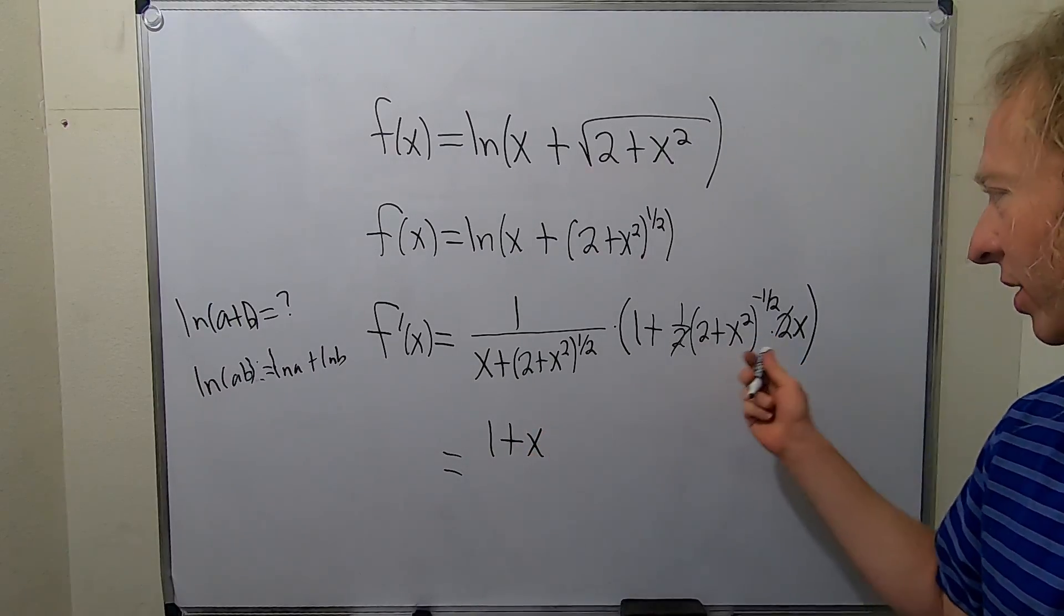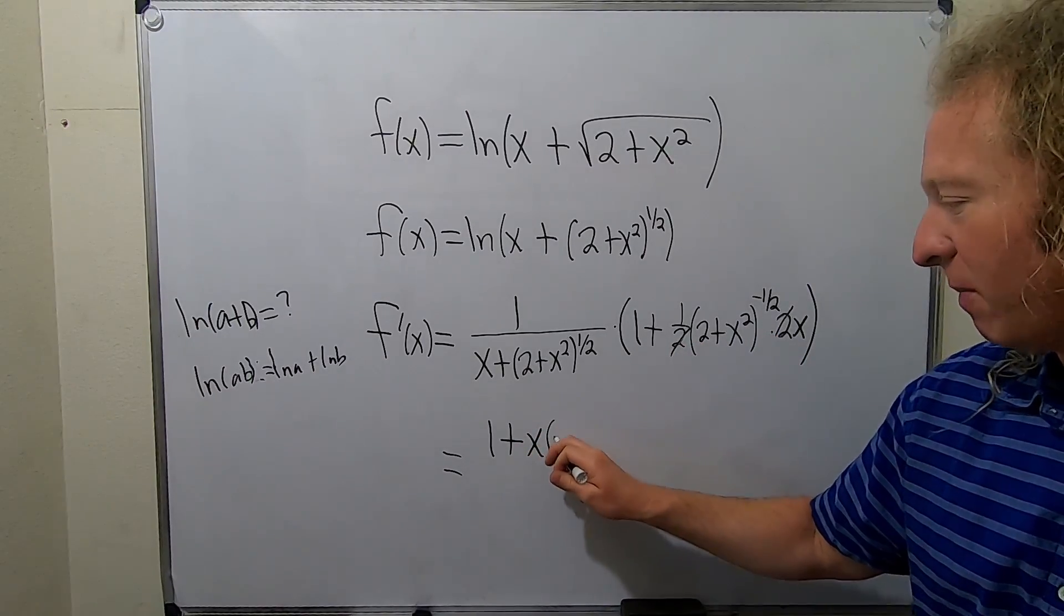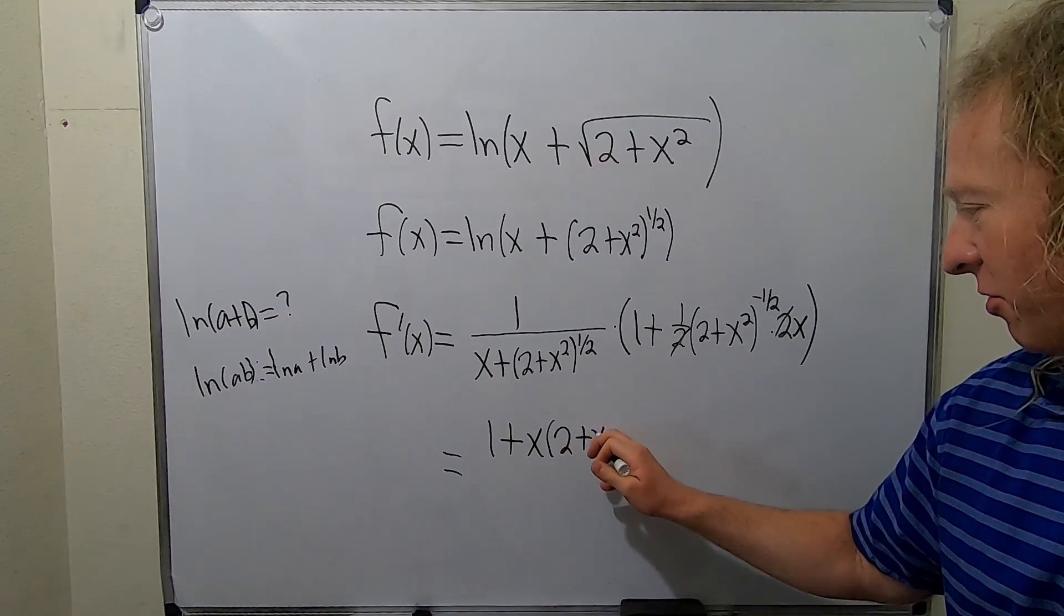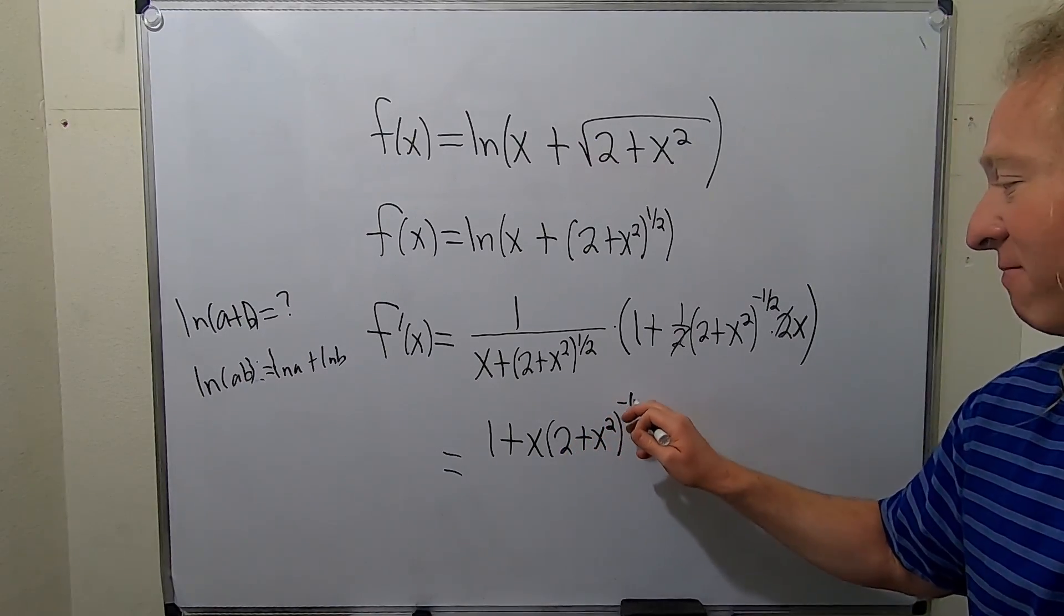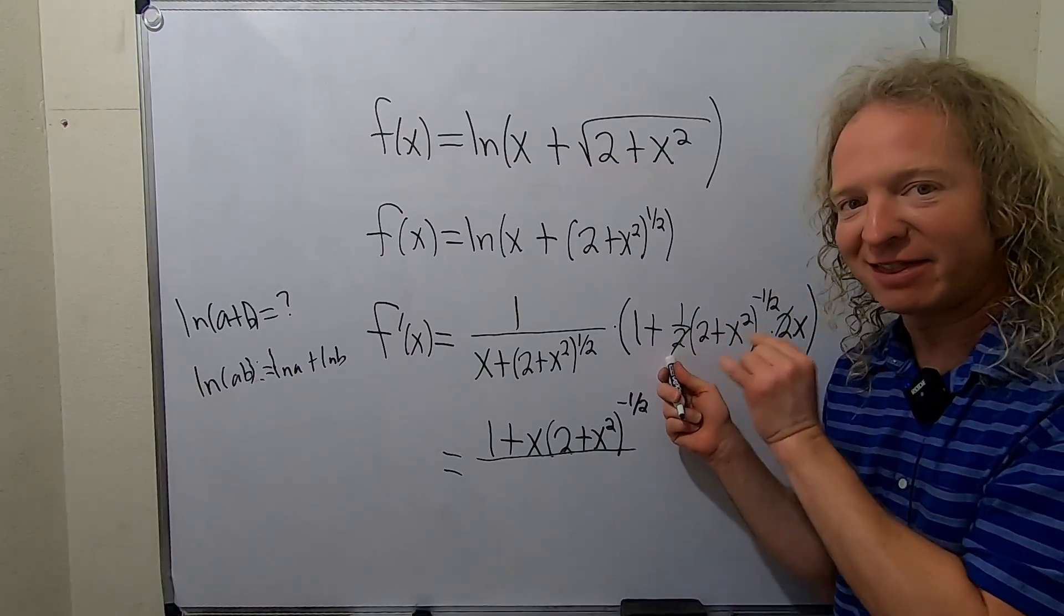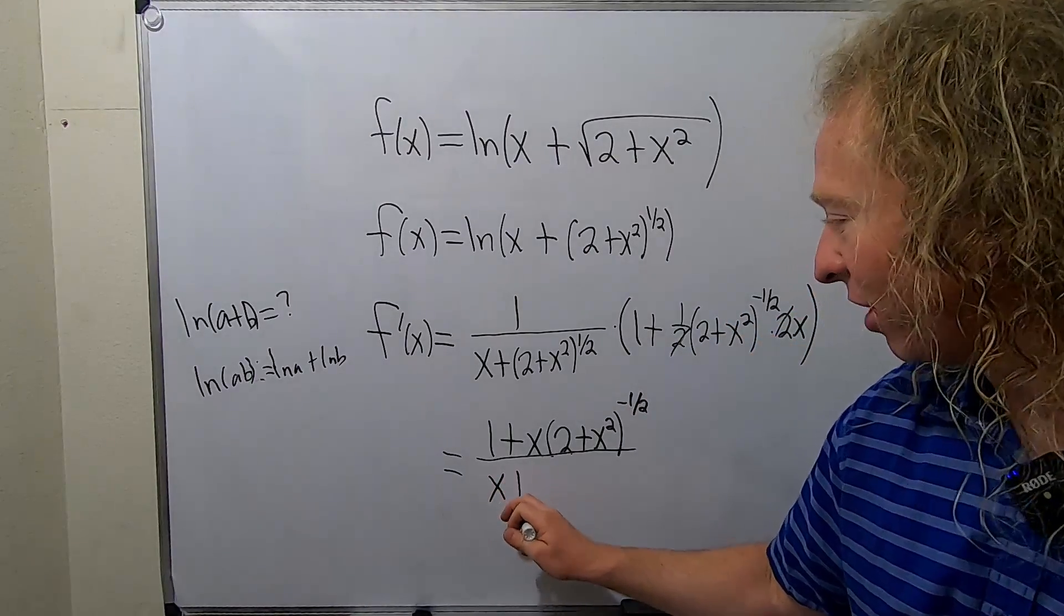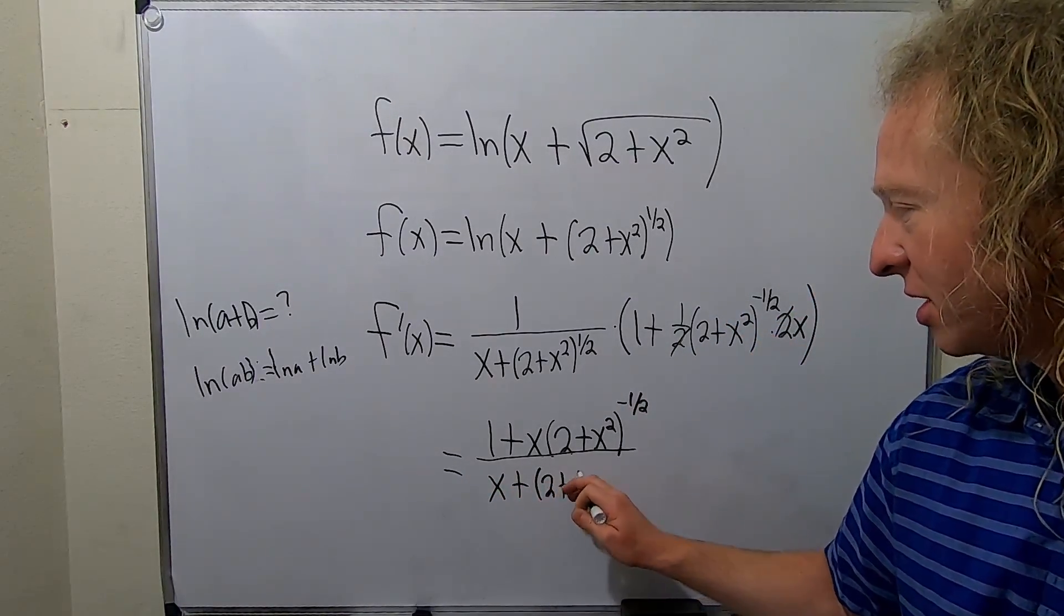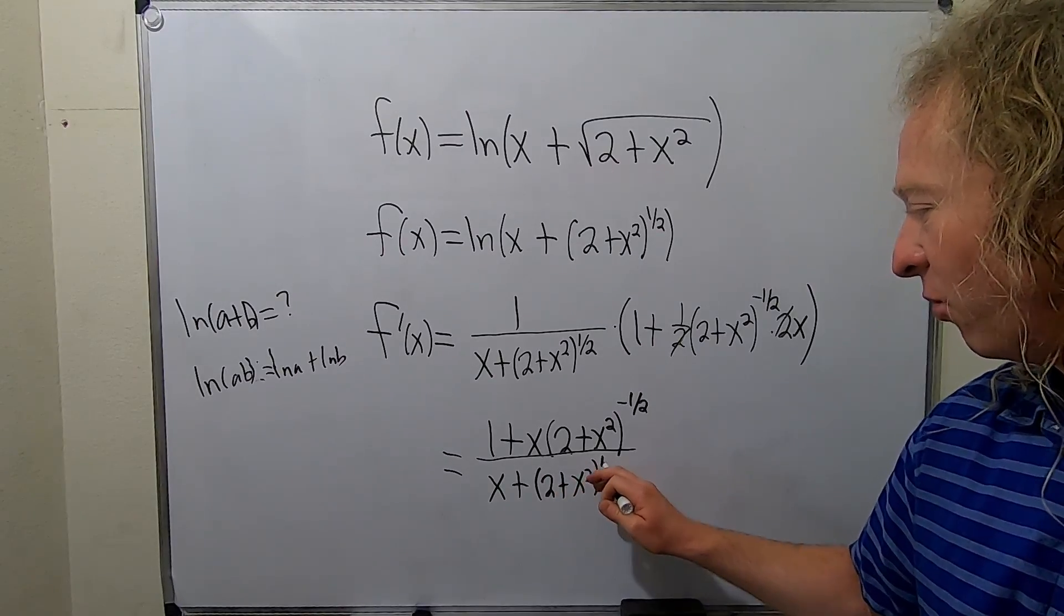So x, really easy to forget the x. I feel like I've done that before in the past. Maybe it was in another life, but I feel like I have made that mistake where I've rewritten this, and I've forgotten the x. I'm pretty sure I've done that. This is x plus (2 plus x squared) to the 1 half.